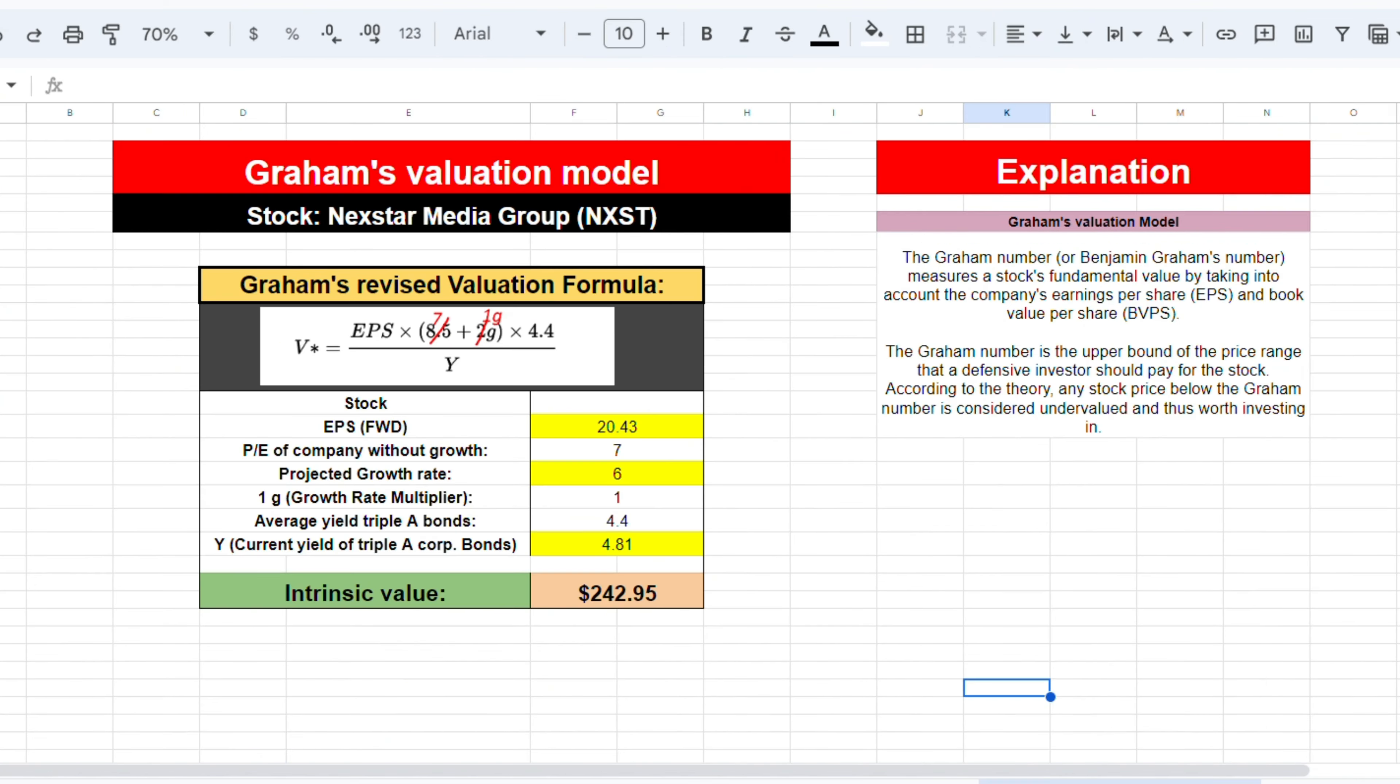The last model I want to use is Graham's valuation. Graham calculates a stock's value by taking into account the EPS and current market condition, and calculates the upper bound of the price range an investor should pay for a stock. Throughout the years, this model has been revised many times. In order to calculate the intrinsic value, we take the earnings per share forward looking, multiply that by 7 times the projected growth rate, 6,